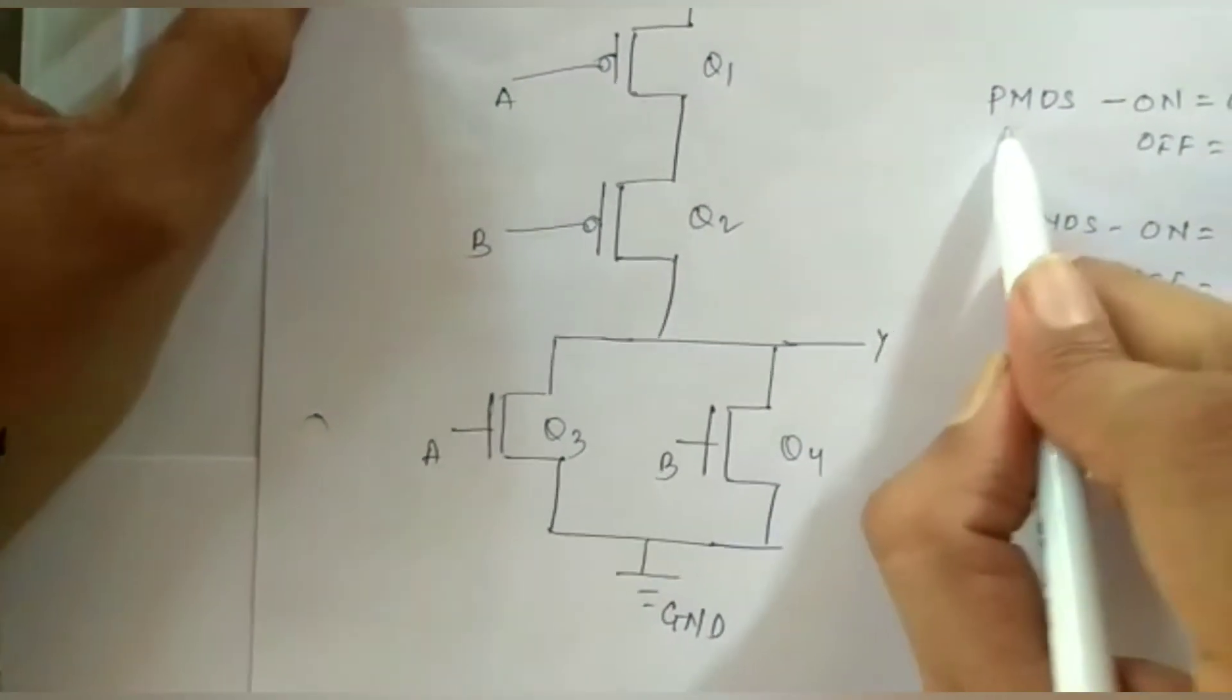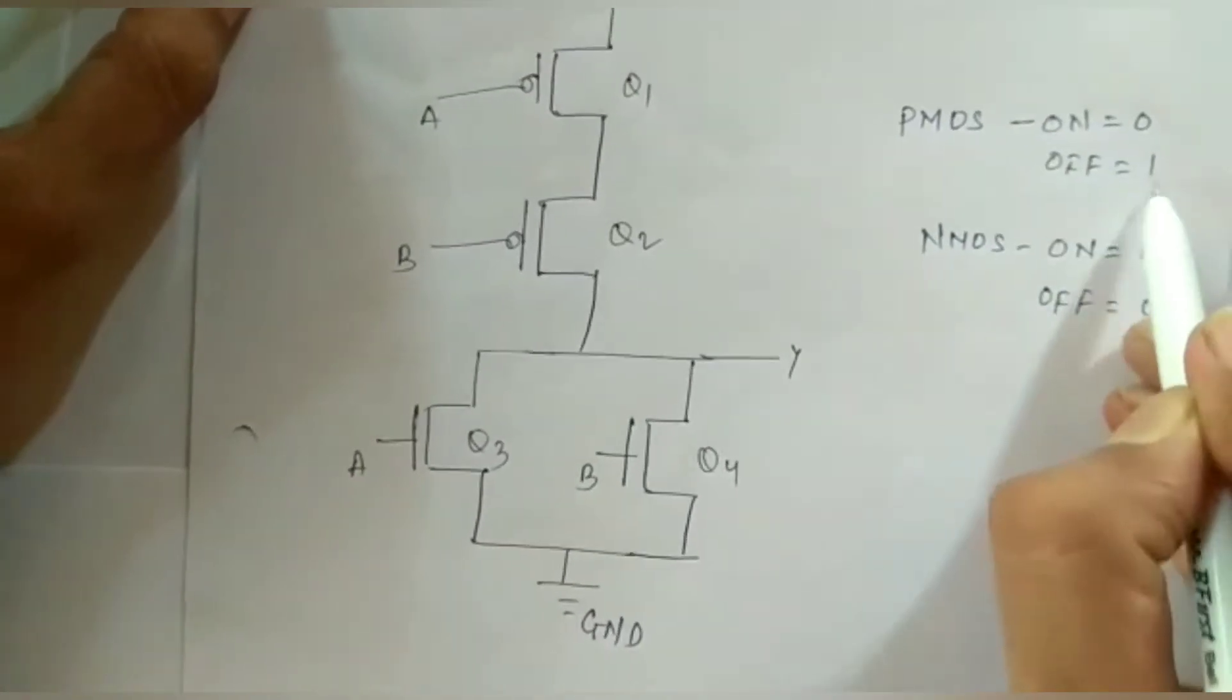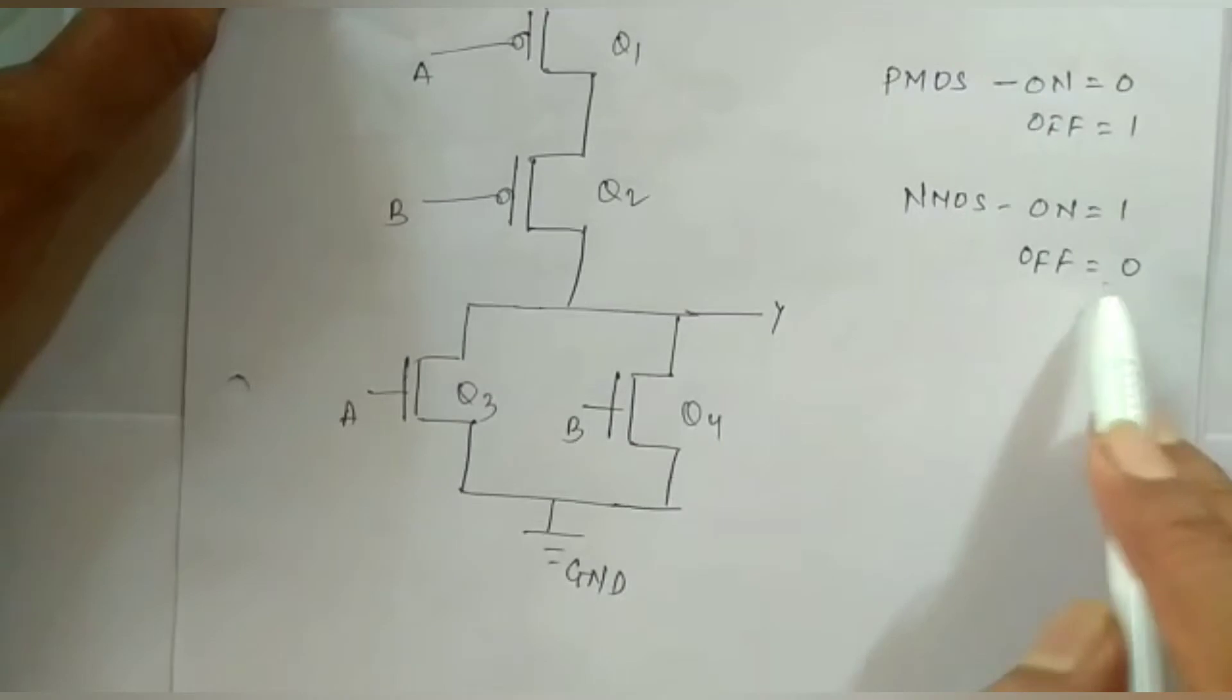We know that PMOS is ON for 0 and OFF for 1. Similarly NMOS is ON for 1 and OFF for 0.